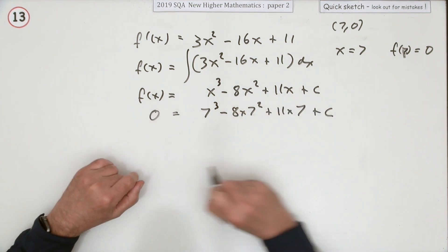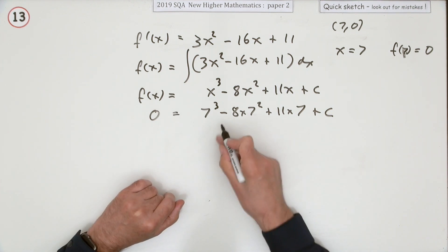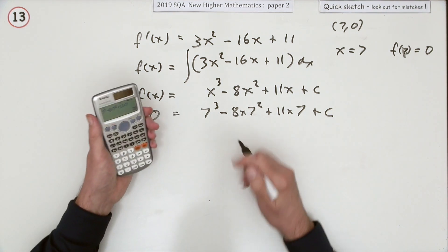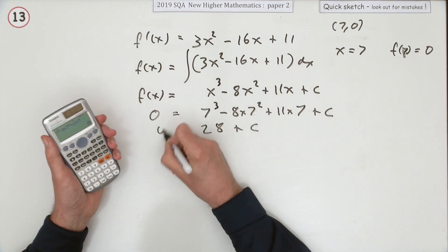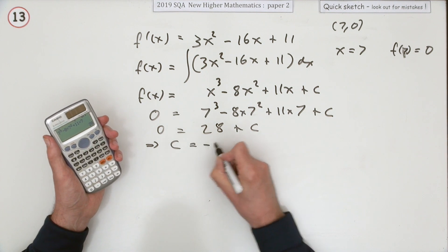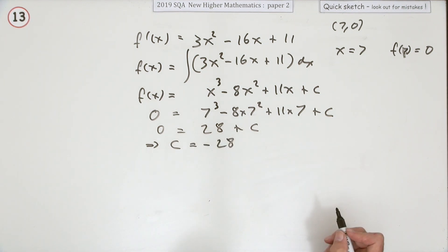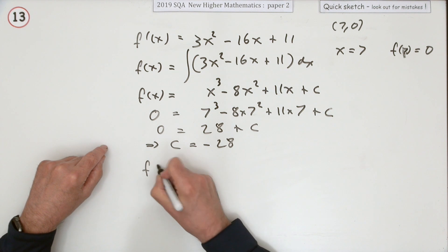That gives the answer zero. Well it looks like a calculator case if you press the buttons. That bit comes to 28 plus c, which means c equals negative 28. Better if that was at the side.